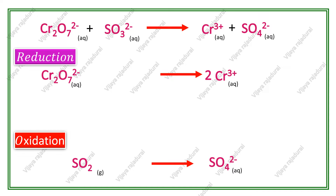The next step is we have to balance atoms other than the central atom. In the reduction reaction, 7 oxygen atoms are present on the reactant side, but no oxygen atom on the product side. So to balance the oxygen atoms, we add 7 water molecules. This gives 14 hydrogens on the product side but none on the reactant side. Since this reaction undergoes in acidic medium, we add 14 H⁺ on the reactant side.